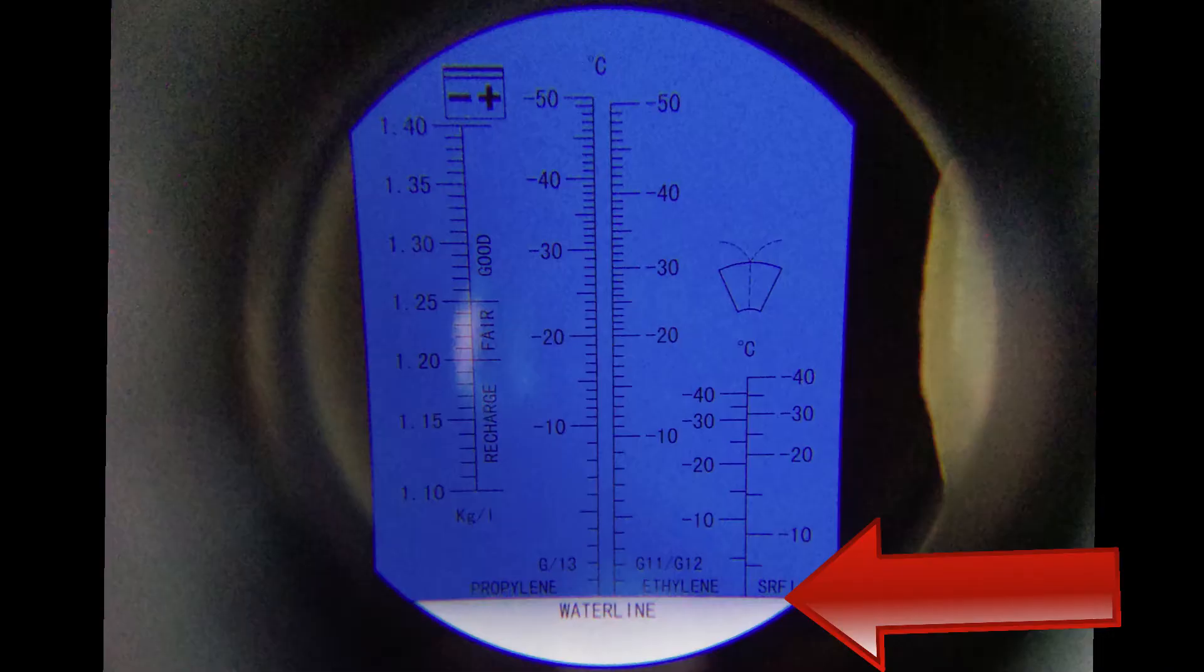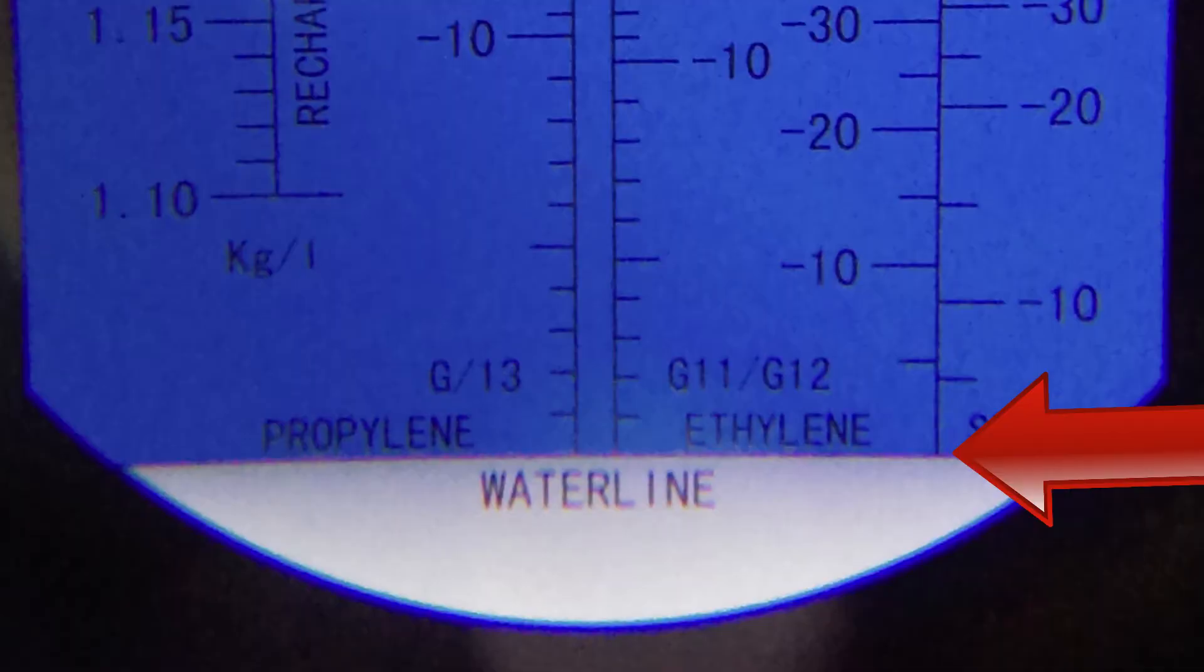Now note the horizontal waterline towards the bottom of the image. As you can see, everything above it is blue and everything below it is white. This confirms that the refractometer is properly configured.